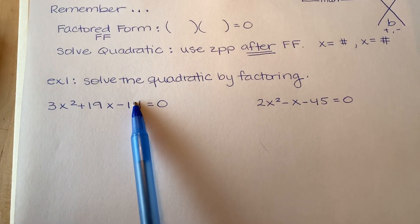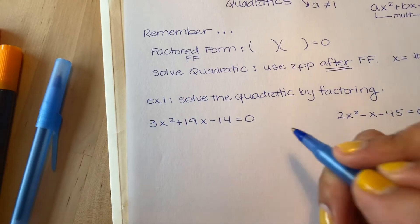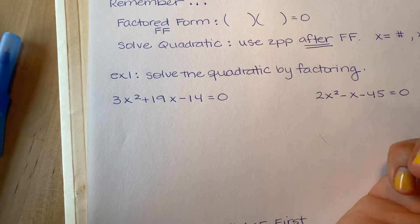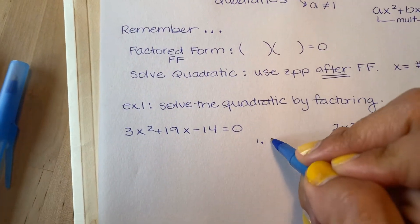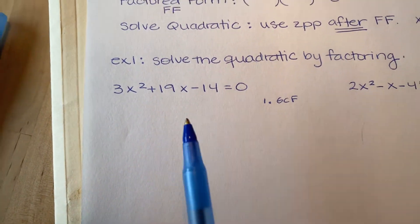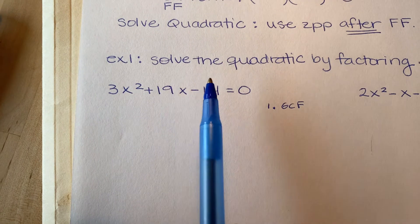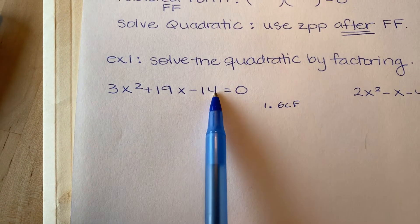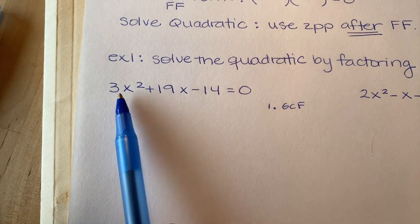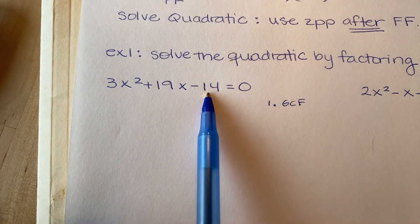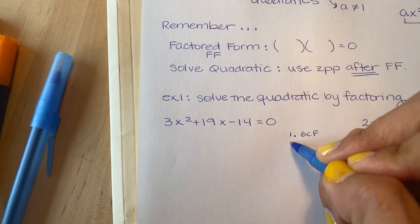Example one: solve the quadratic by factoring. Step one — look for a GCF. Look at your coefficients and constants: a is 3, b is positive 19, c is negative 14. Now 19 is prime, 3 is prime, and 14 factors as 2 and 7. But 3 does not divide into 19 and 3 does not divide into 14, so there is no GCF. We continue to step two.